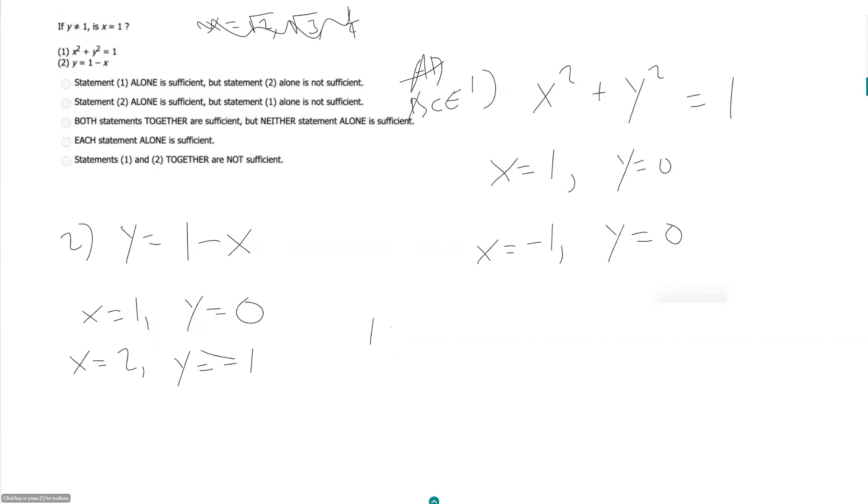So now what should we do looking at them together? If I try plugging in 1 minus x for y in my first statement, I get x squared plus 1 minus x squared is equal to 1. And if I distribute this out, this gives me x squared plus 1 squared which is 1.